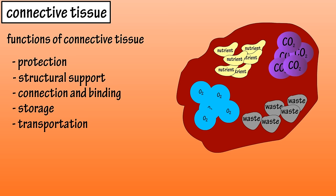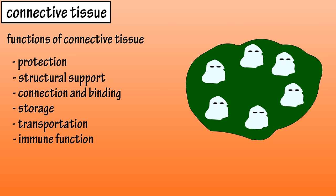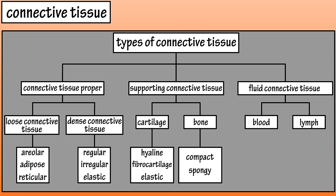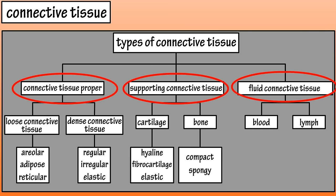Connective tissue helps with immune function, as many connective tissues contain white blood cells that protect the body from invaders. Now we're going to go through the various types of connective tissues and the basic structure of each. On the screen is a board with the different classifications of connective tissues. There are three main classifications: connective tissue proper, supporting connective tissue, and fluid connective tissue.